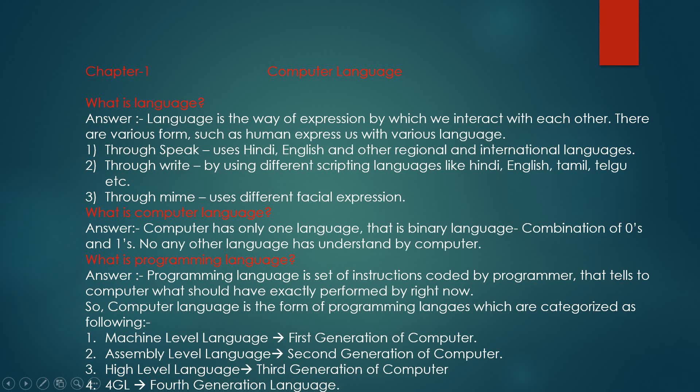So what is a programming language? Programming language is a set of instructions coded by the programmer that tells the computer what should be performed exactly. It is coding in the form of an instruction set, and the computer works according to the program, performing execution step by step in the order the programmer has designed. So computer language depends on the programming language.